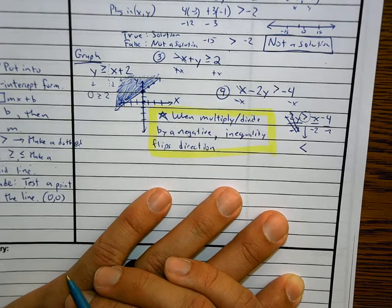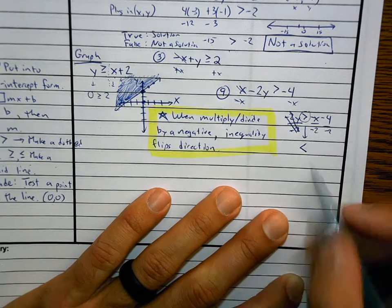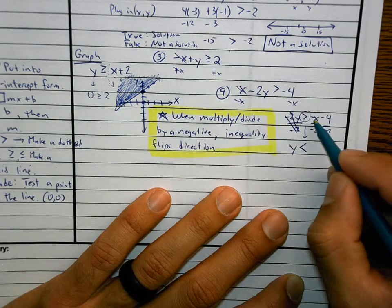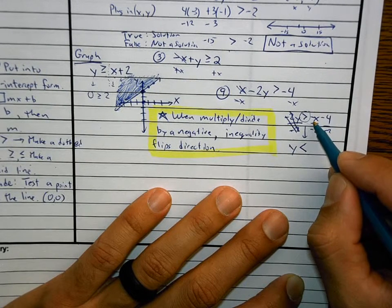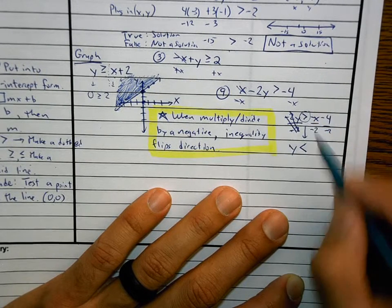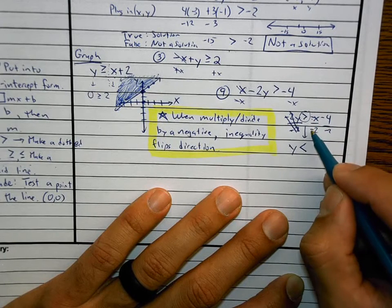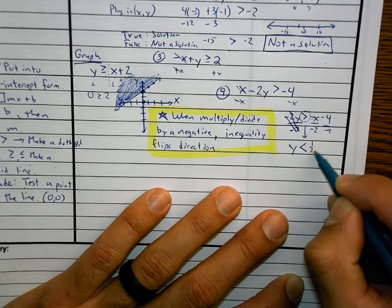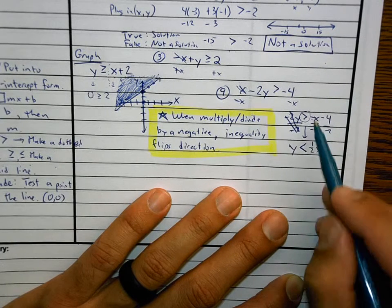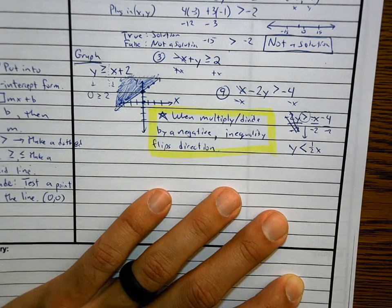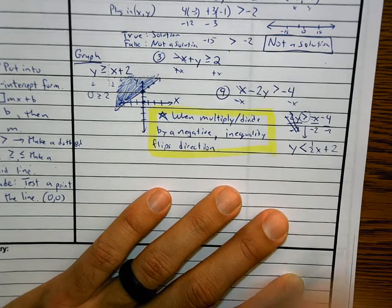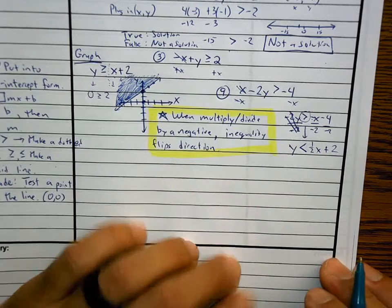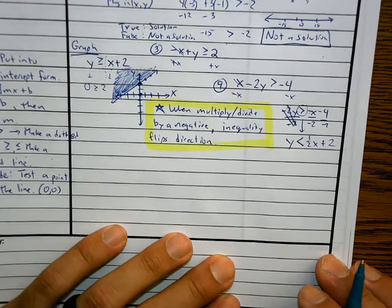I'll leave this as a fraction since 2 does not go into the invisible 1. A negative divided by a negative is a positive, so I write it as 1 half x. Negative divided by negative is positive 2. Now I can graph it because I know what the b is.